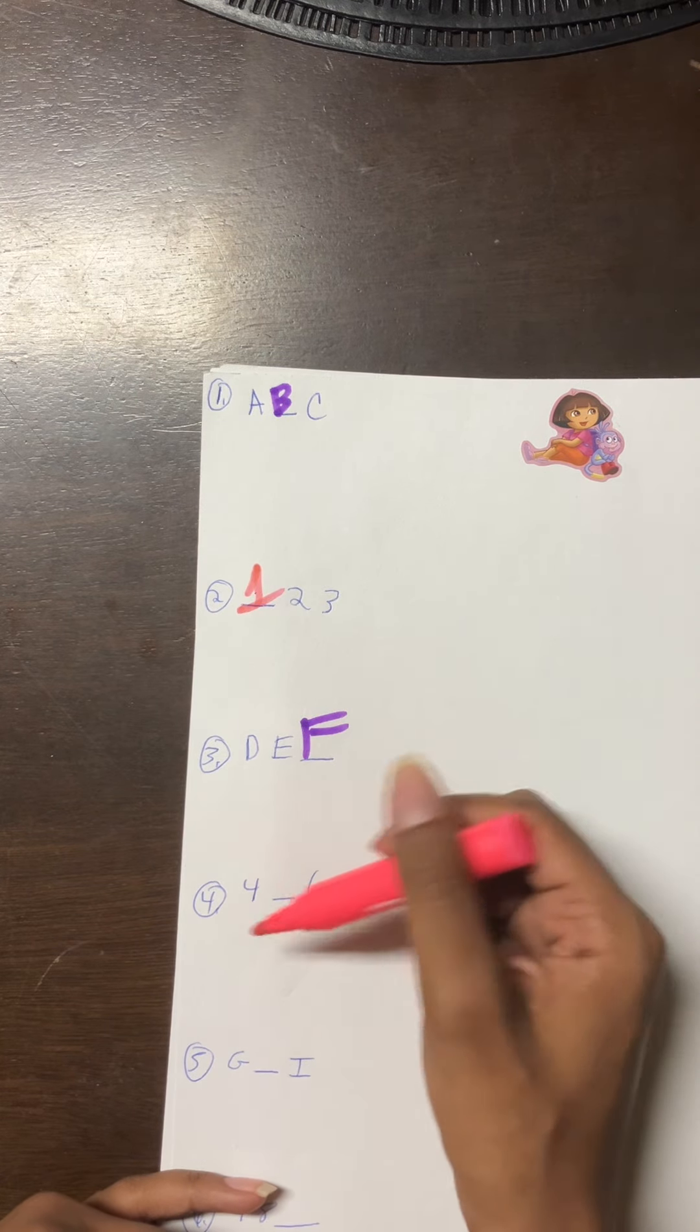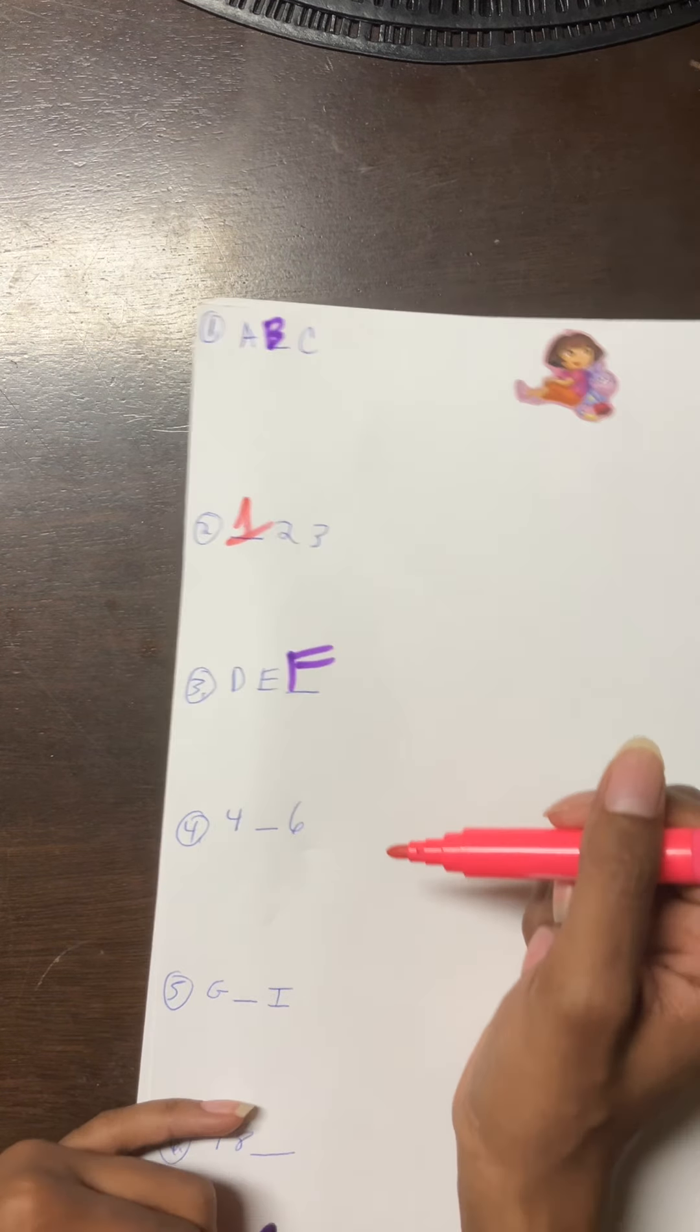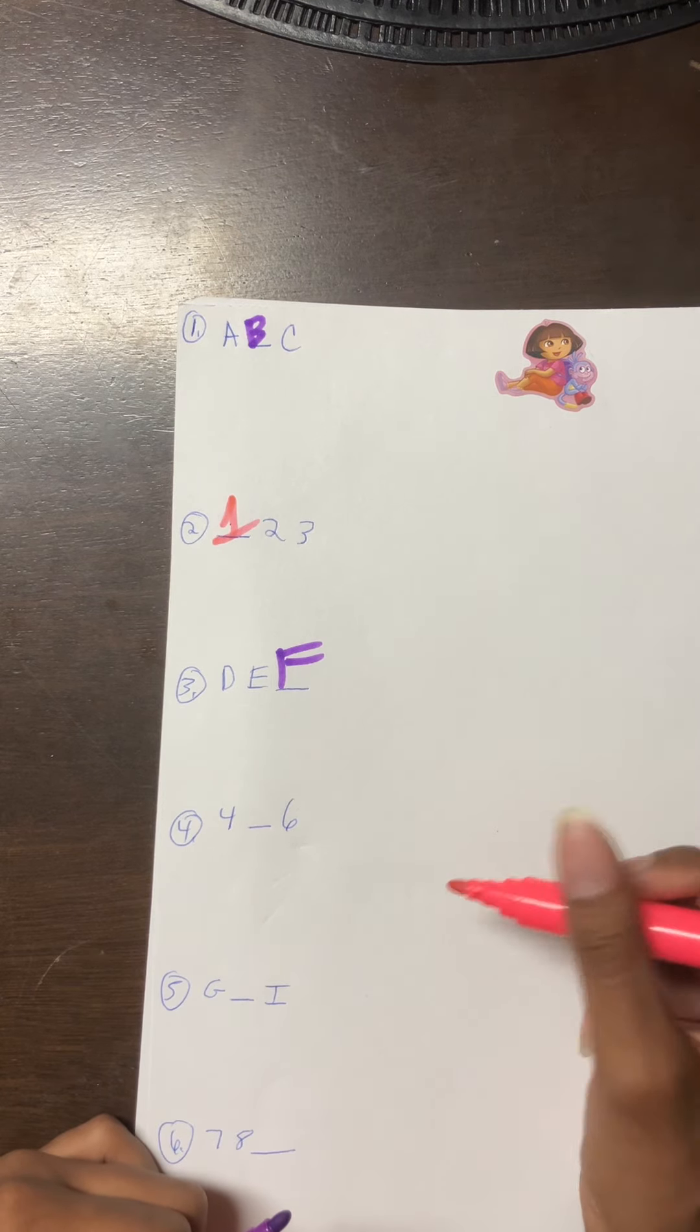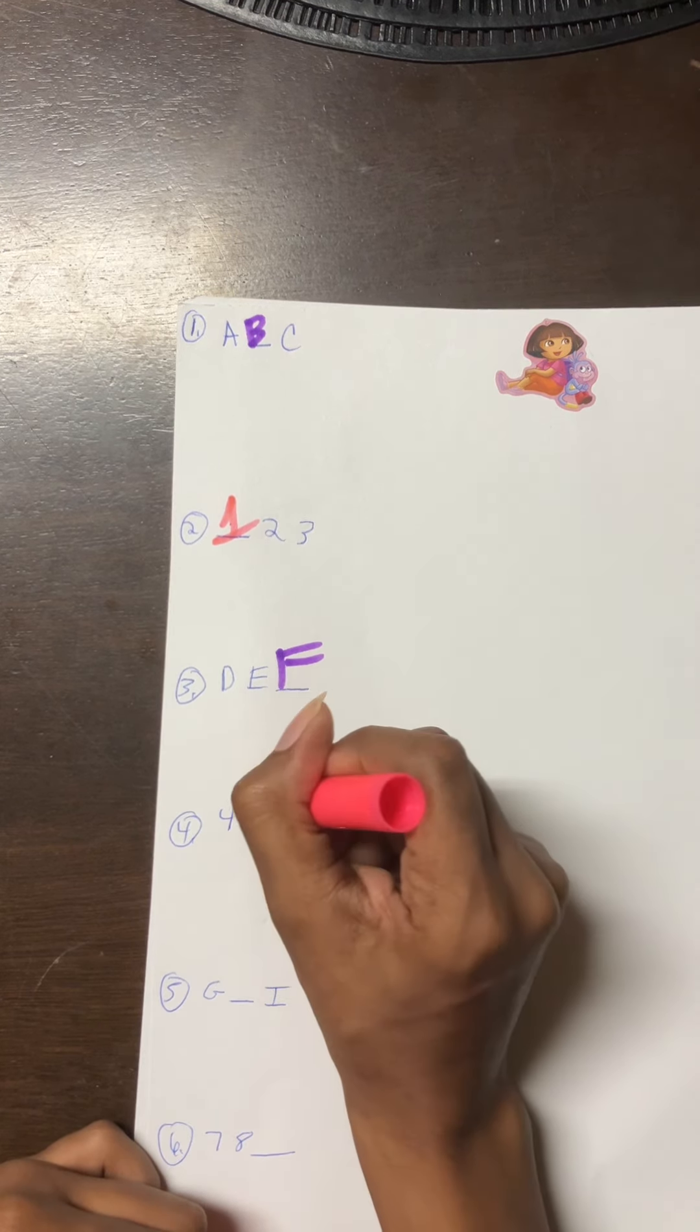Number four: 4 blank 6. I'm gonna say it: 4 blank 6. Which one? One two three four five. So we're gonna write a five.